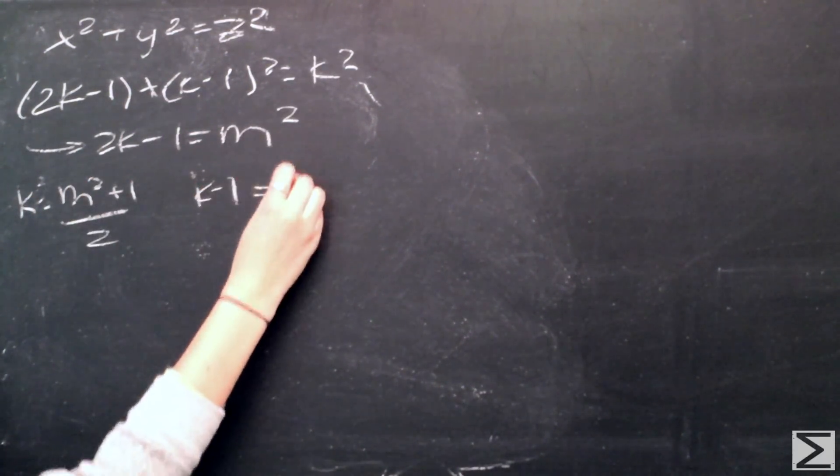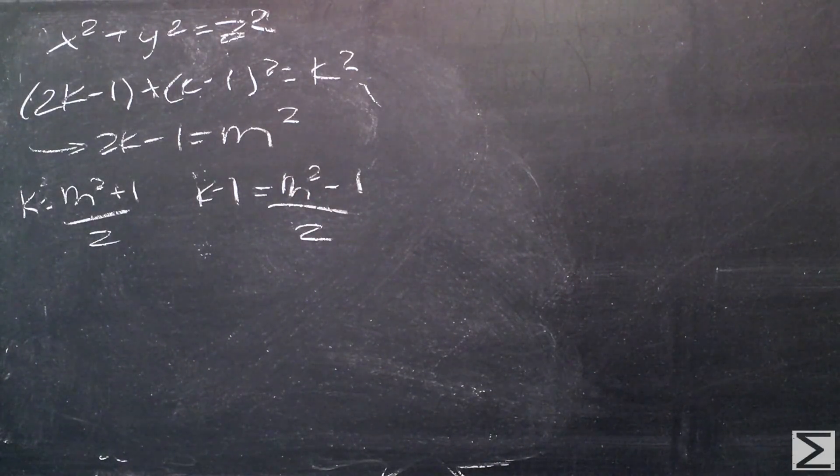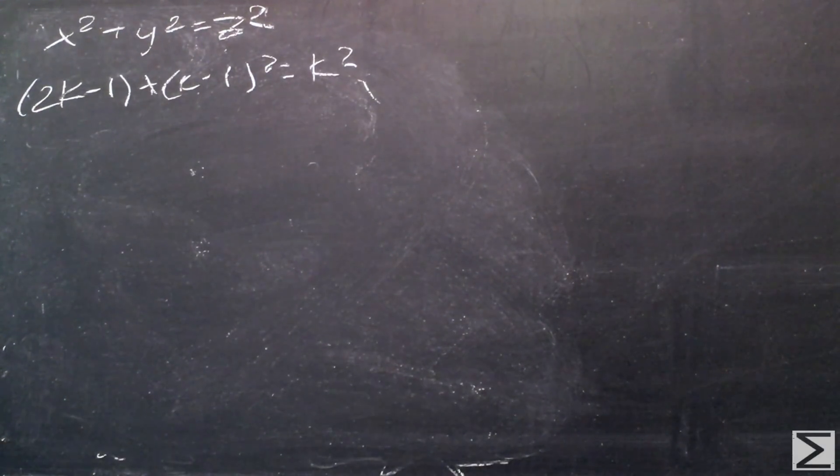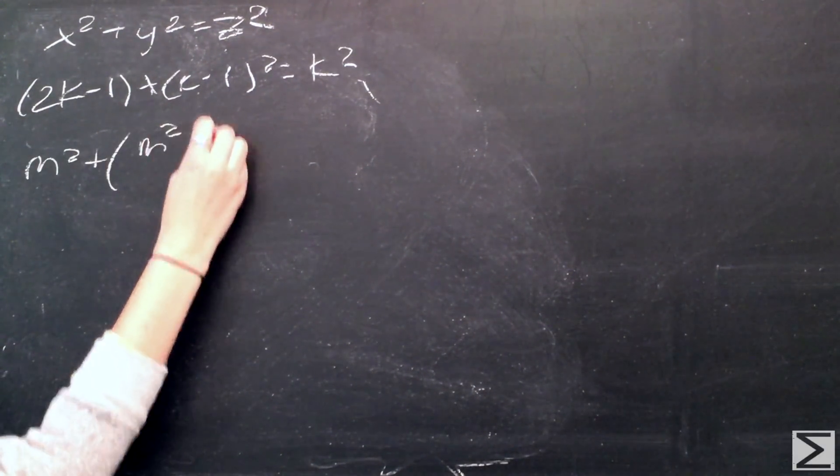We can now, from this new equation, solve for k and k minus 1. We can then substitute those back into the original equation for the square number, giving us an equation only in M.